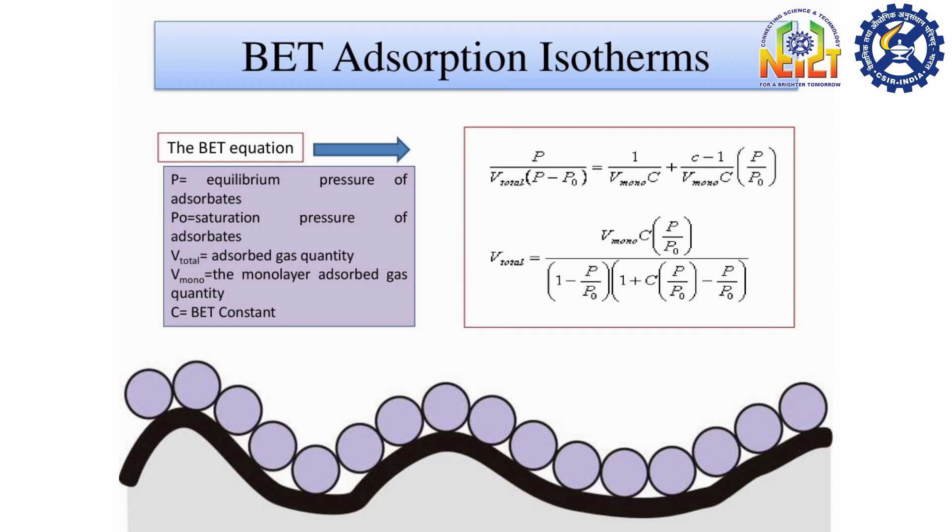Samples with low BET surface area can adequately be characterized via BET analysis by krypton gas adsorption. In those cases, only a part of the isotherm can be measured, but this still provides a BET surface area with high accuracy.